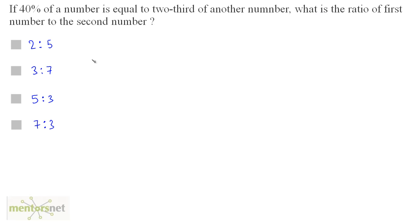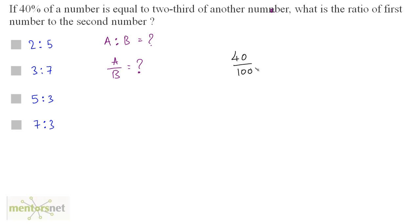If forty percent of a number is equal to two-thirds of another number, what is the ratio of the first number to the second number? Let these numbers be a and b. We want a:b. Forty percent of the first number equals two-thirds of another number, so (40/100) × a = (2/3) × b. The zeros cancel, and rearranging to find a/b gives us (2/3) × (10/4).